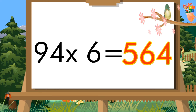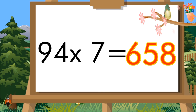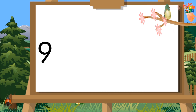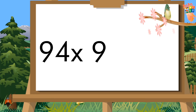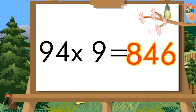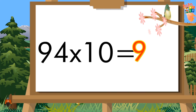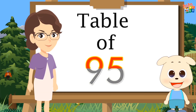Ninety-four sixes are five hundred sixty-four. Ninety-four sevens are six hundred fifty-eight. Ninety-four eights are seven hundred fifty-two. Ninety-four nines are eight hundred forty-six. Ninety-four tens are nine hundred forty. Table of 95.